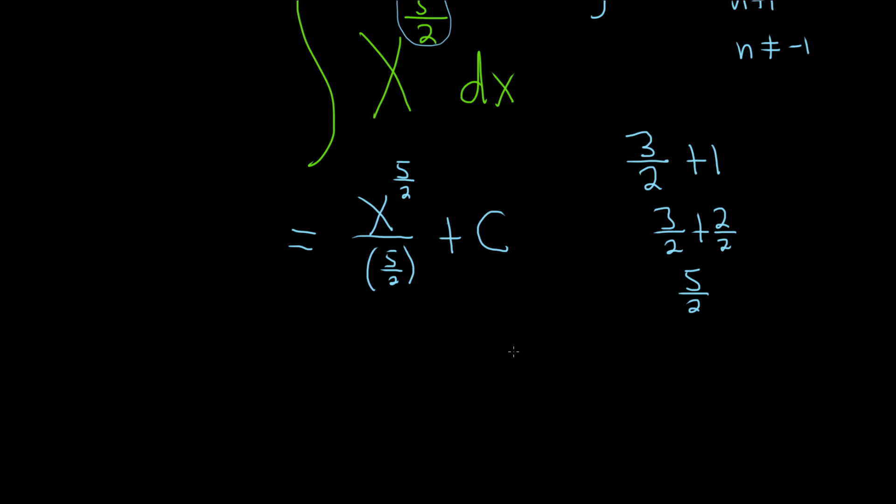All right, so because we're dividing by 5 halves, that's the same as multiplying by the reciprocal. The reciprocal of 5 halves is 2 fifths. So this is really 2 fifths times x to the 5 halves, plus our capital C. And that would be the final answer.